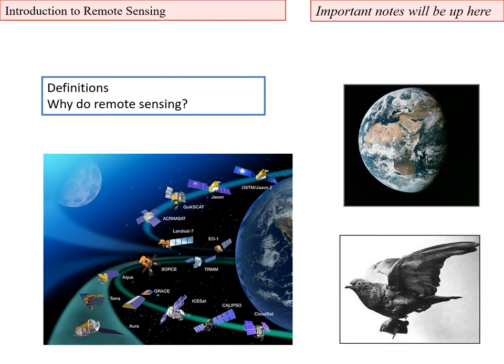Hello and welcome to Introduction to Remote Sensing. This course is listed in four ways — under GR (Geography) and NR (Natural Resources) sections, at both Undergraduate 323 level and Graduate 503 level. I'm going to talk briefly about definitions for remote sensing, why we do remote sensing, and some of the interesting applications.